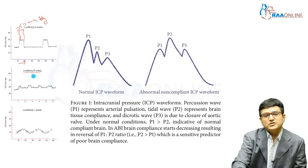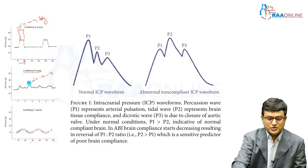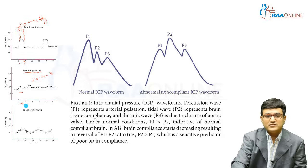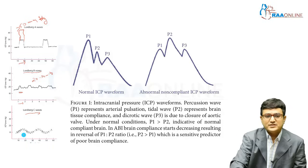Lundberg B waves have pressures varying from 20 to 30 mmHg, sometimes more, but they last only 1 to 2 minutes, with pressures definitely less than 50. Their exact clinical value is not fully known, but they are seen in severe traumatic brain injury. Lundberg C waves are normal waveforms ranging 10 to 20 mmHg, lasting 1 to 2 minutes, varying with the cardiac and respiratory cycle — these are considered normal ICP waveforms.